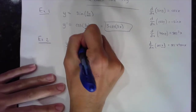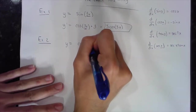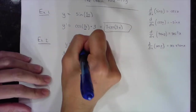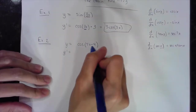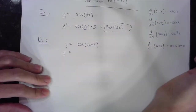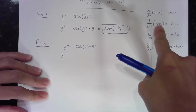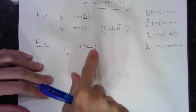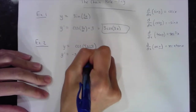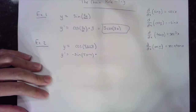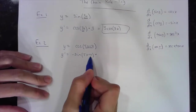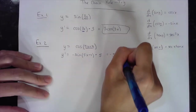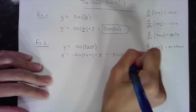Let's do another example: cosine of 5x plus 4, and I want the first derivative of that. I take the derivative of the whole thing — the derivative of cosine of an angle is negative sine of the same angle. The chain rule says multiply by the derivative of the angle, which is 5. So the full derivative is negative 5 times sine of 5x plus 4.